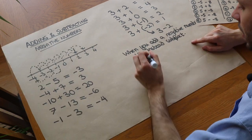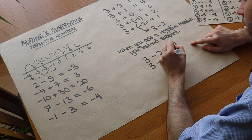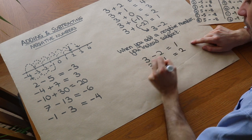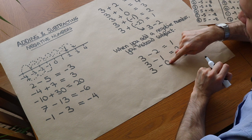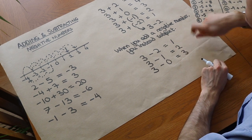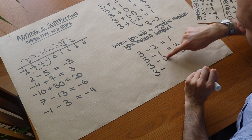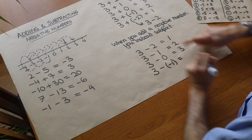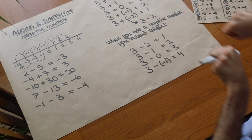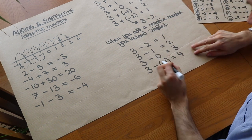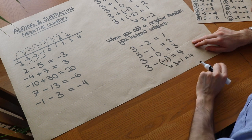What about subtracting a negative number? If I did three minus two that gives me one. Let's make a pattern: three minus one gives two, three minus zero gives three. I'm reducing the number I'm subtracting by one each time, so the result gets one bigger each time. Continuing the pattern: three minus negative one — the result goes up to four. So when I subtract negative one I actually move in the opposite direction; instead of subtracting I'm adding. This effectively becomes three plus one, which is four. When you subtract a negative number you instead add.